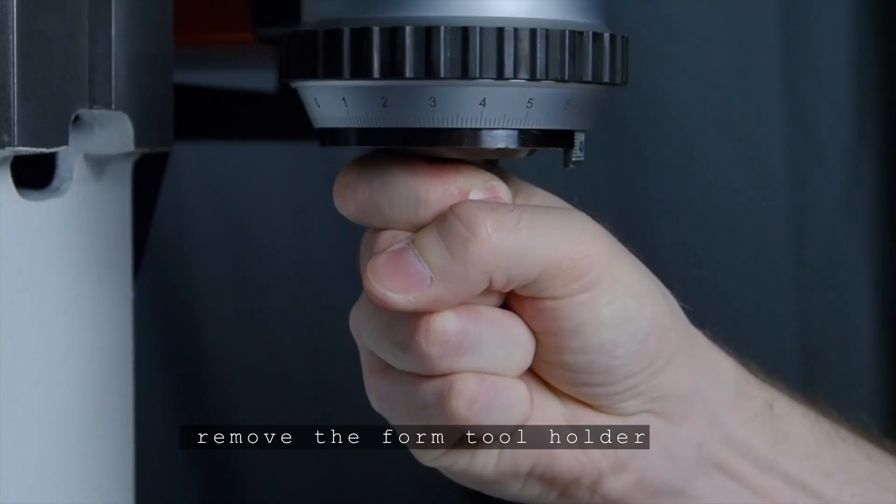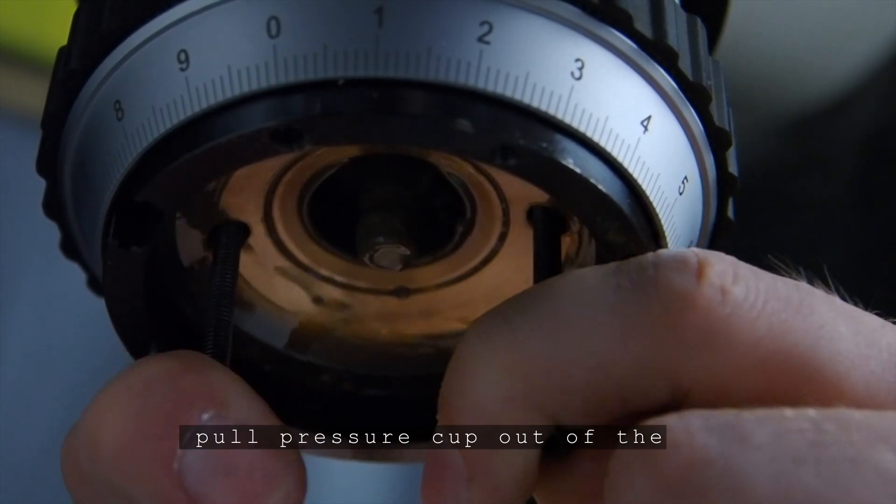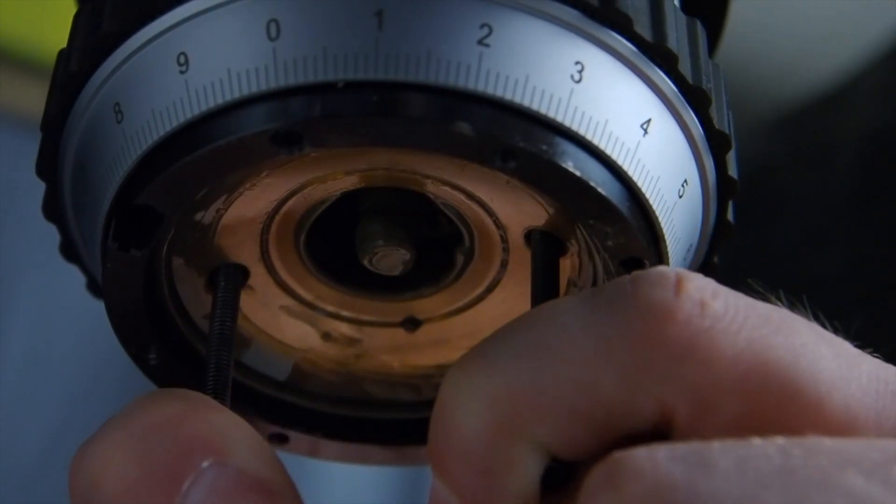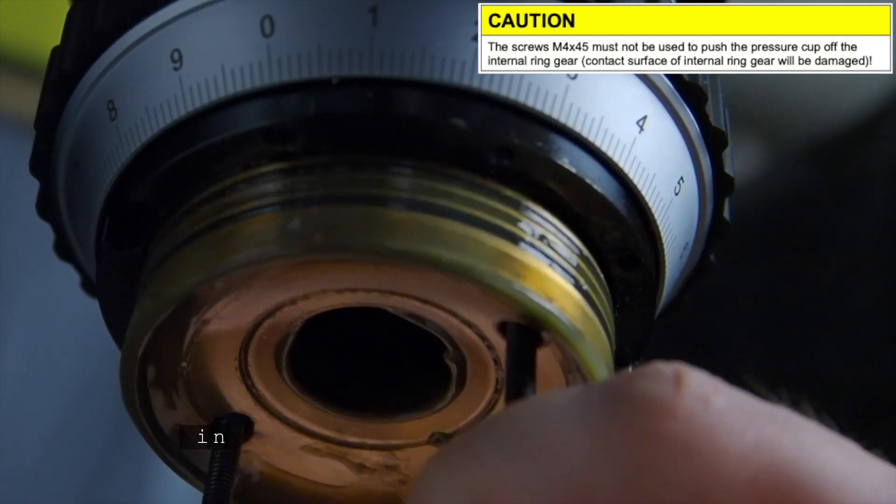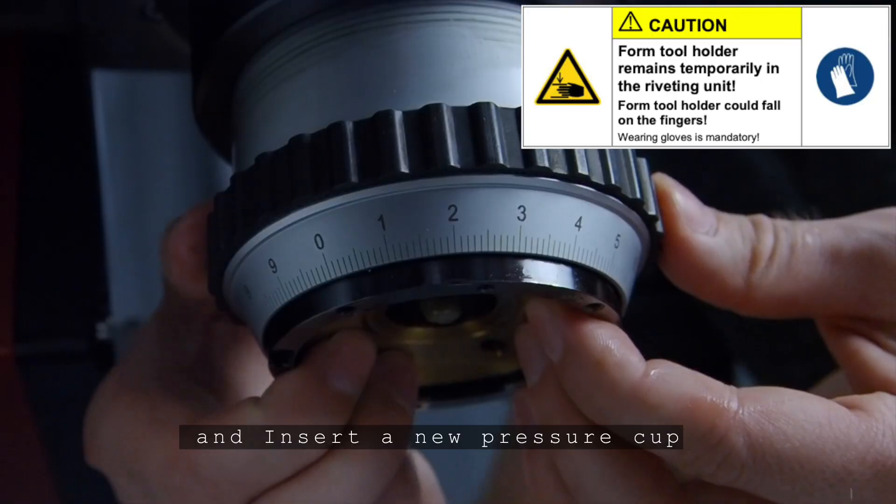Remove the form tool holder, pull the pressure cup out of the centering in the connection piece using the screws provided in the machine accessories and insert a new pressure cup.